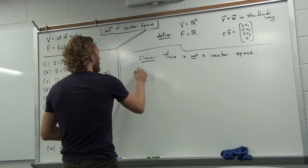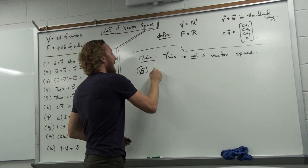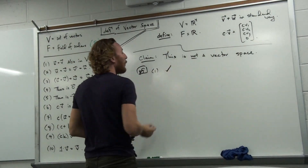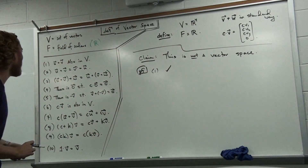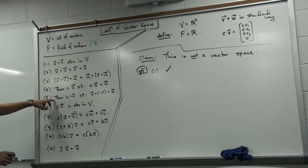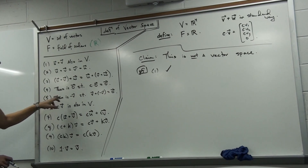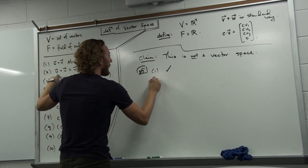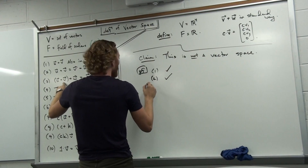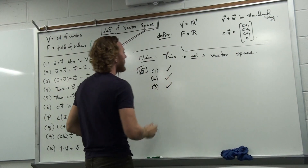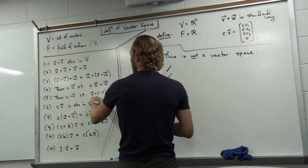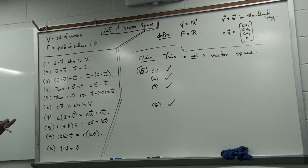My claim is that you're going to run into an issue with one of these properties. Let's check to see if this is in fact a vector space. The first claim is that when you sum two vectors you also get a vector, and this will work since we defined addition in the standard way. In fact, every stipulation that relates only to addition would apply here, so the order of addition doesn't matter, grouping of three vectors doesn't matter, and every vector has an opposite that sums to the zero vector.